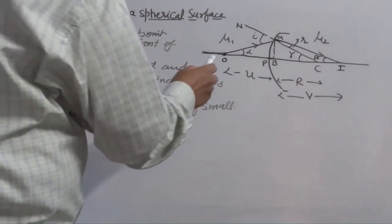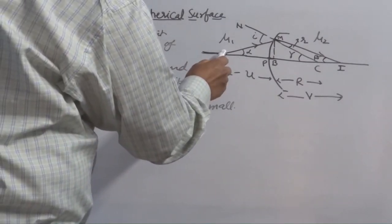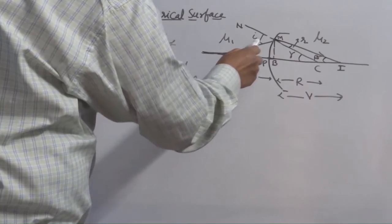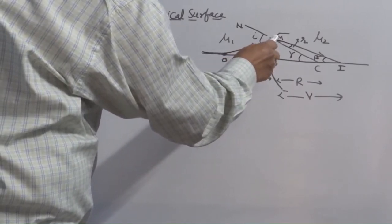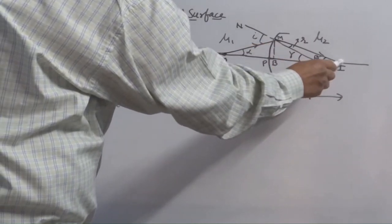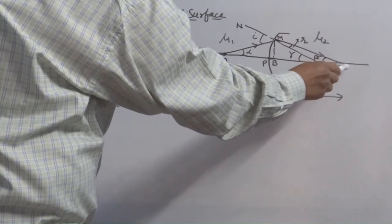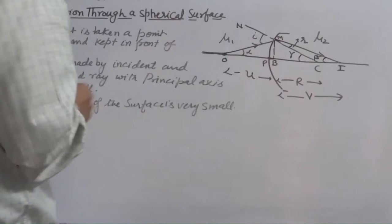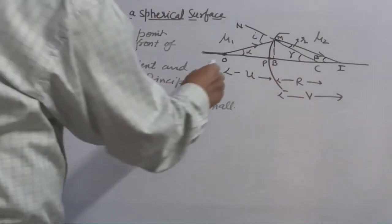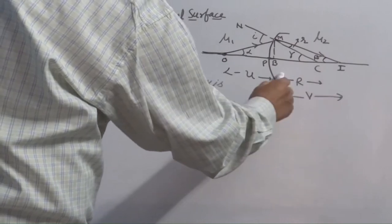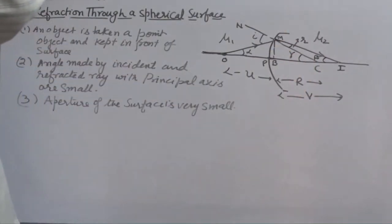Let's see what is there in the figure. This is a point object. Incident ray hits on the surface at point M and gets refracted. And finally it forms an image at I dash. NC is the normal. C is the center of curvature of this surface. This is distance of an object. This is distance of an image. This is radius of curvature.